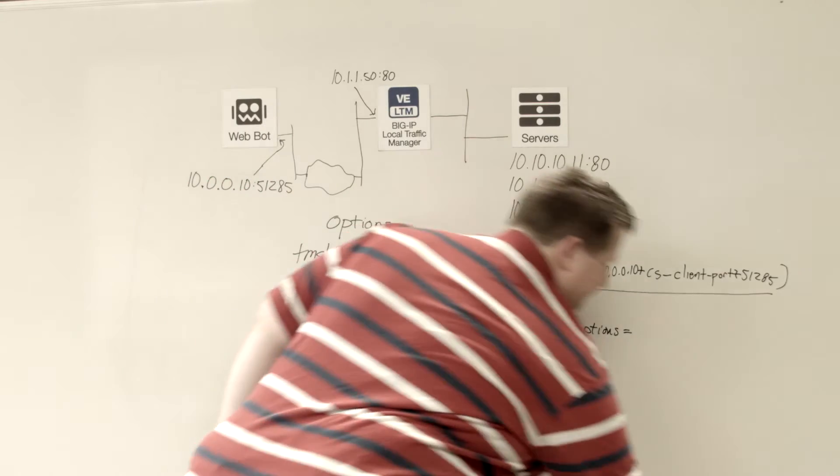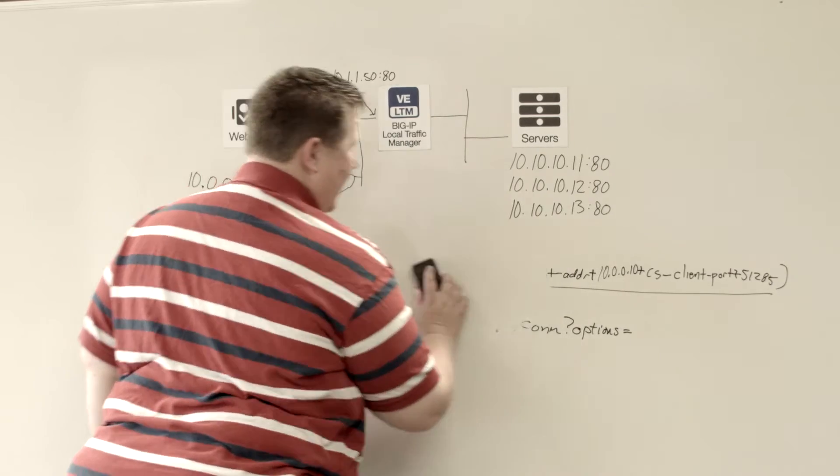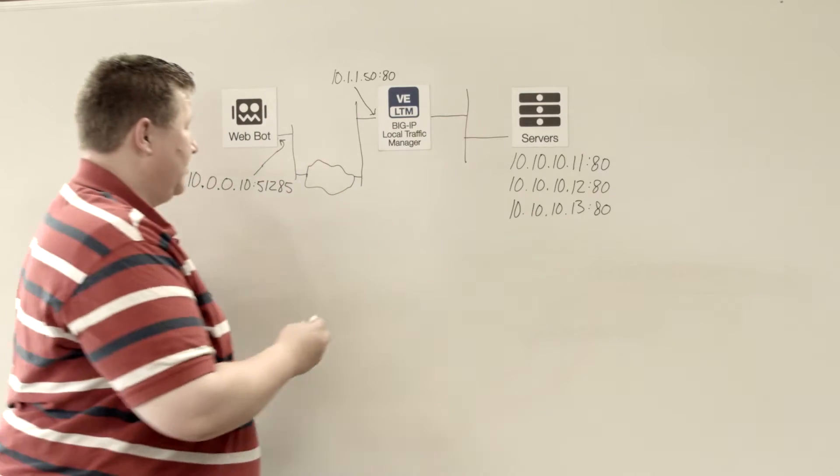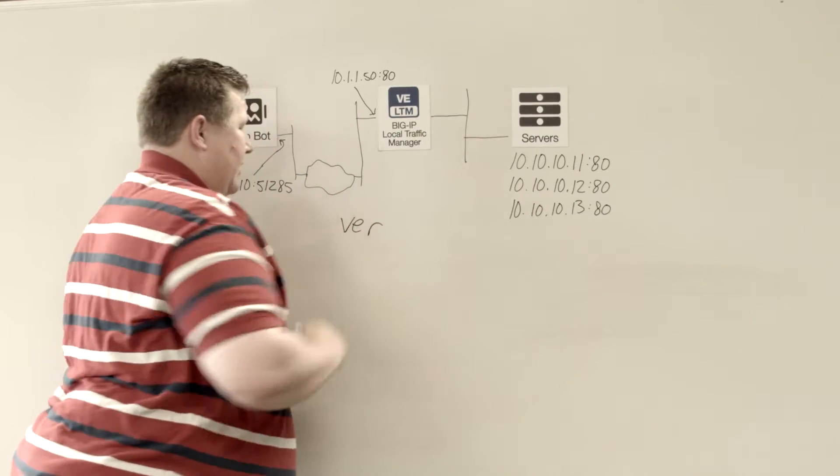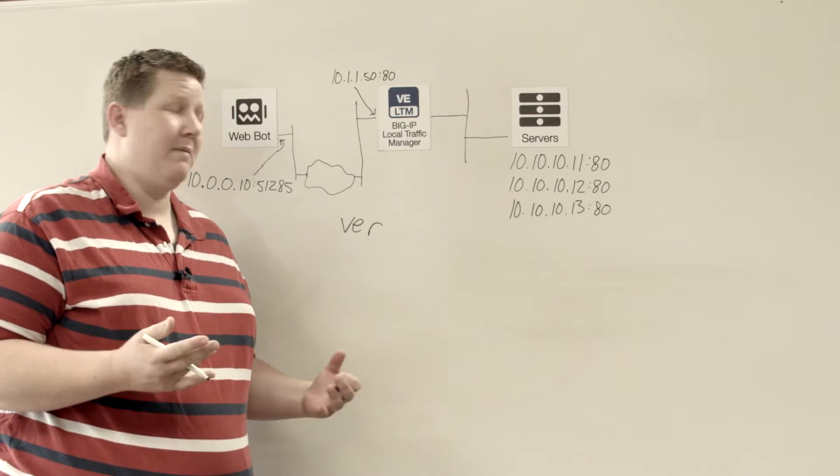All right. So that's one example here. Now some of the other options, and we won't go into a whole bunch of examples for the rest of them, but you also have the ver, and this is for version. And this is to keep consistency in tmos versions.